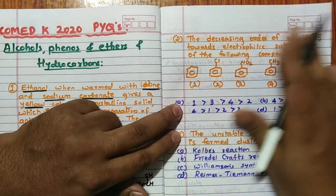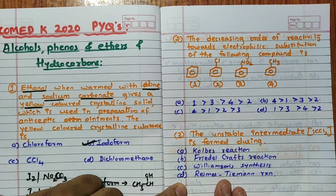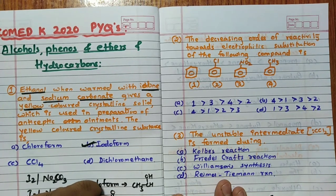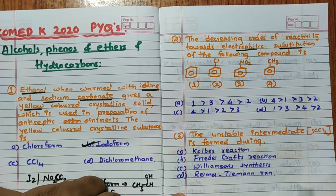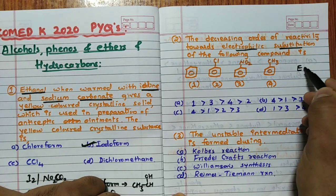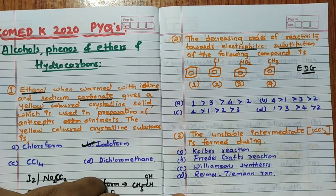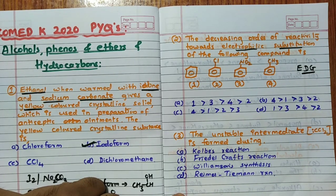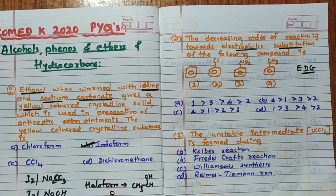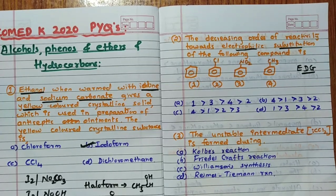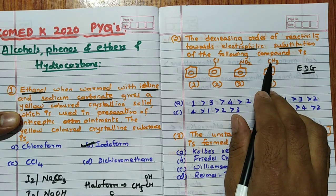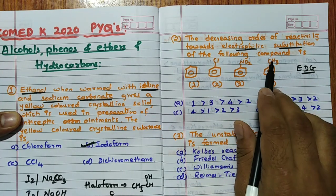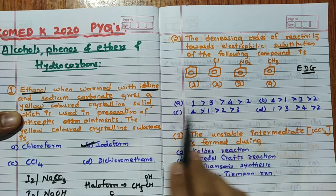Then the decreasing order of reactivity towards electrophilic substitution reaction of the following compound is. In this particular case, electrophilic substitution they are telling. Electrophilic substitution reaction will be more for that compound which is having electron donating groups, which will increase the electrophilic substitution reaction because it will activate the benzene ring. So now we can say, here no group Cl, NO2, CS3, definitely CS3 is very good electron donating among all this. So 4 should be more, so 2 options left, B and C.